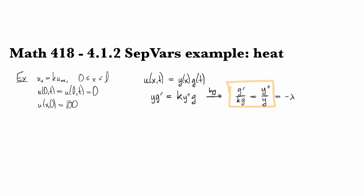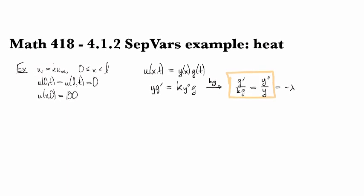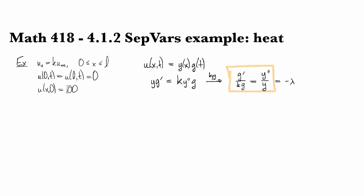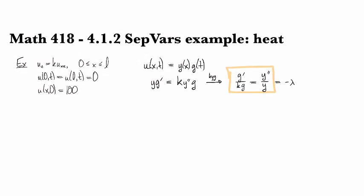And so the only way that this equation can hold is if both sides are equal to the same constant. And we call it minus lambda because it turns out to make signs convenient.